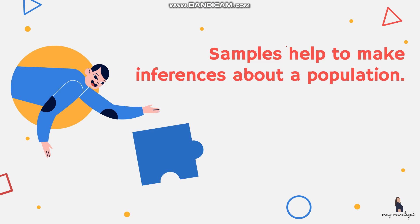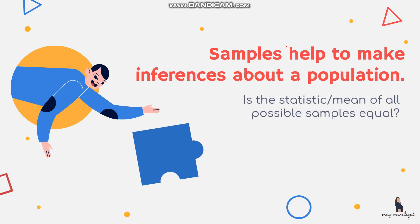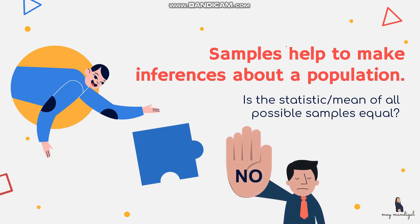Samples help to make inferences about a population. Once you have a sample, it represents the population and helps us write a conclusion or inference about it. There can be many different sets of samples in a given population — sample number one, sample number two, and so forth. Now, is the mean of all possible samples equal? The answer is no, because different samples may have different data, so different samples can give us a different mean.